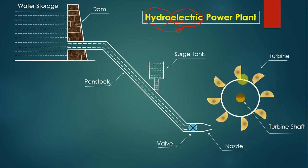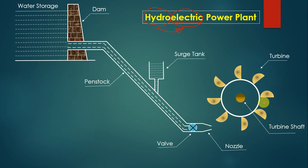The dam is at a high height while the turbine house is at a lower height. In an actual example, the height difference from dam to turbine may be in kilometers. The dam stores water at height, and the turbine house is on the lower side. The dam and turbine house are connected by a pipeline.